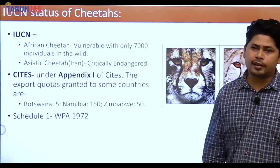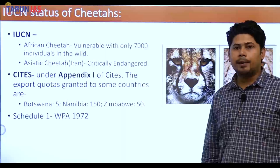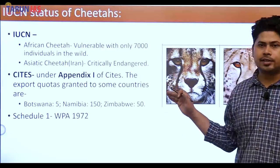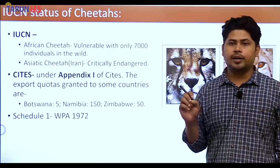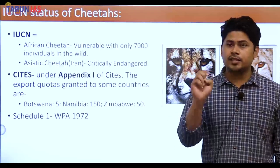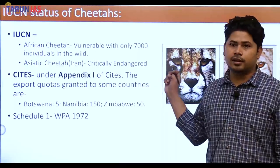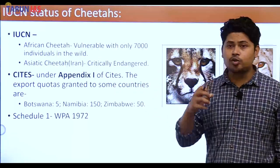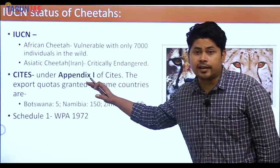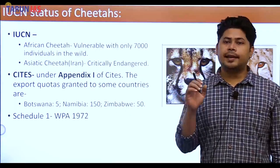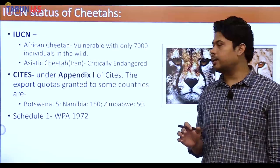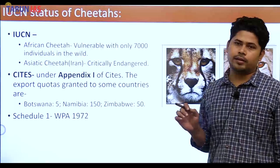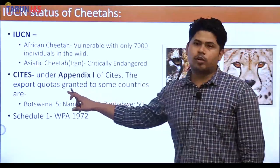Cheetahs are listed under CITES — the Convention on International Trade in Endangered Species — under Appendix 1. Appendix 1 means CITES mandates that each country legislate a domestic law prohibiting commercial trade in cheetahs, their trophies, and their parts. Export quotas have however been granted to some countries — Botswana has been granted 5, Namibia 150, and Zimbabwe 50 — but these quotas are for live animals only. Under that export quota, cheetahs have been imported into India.